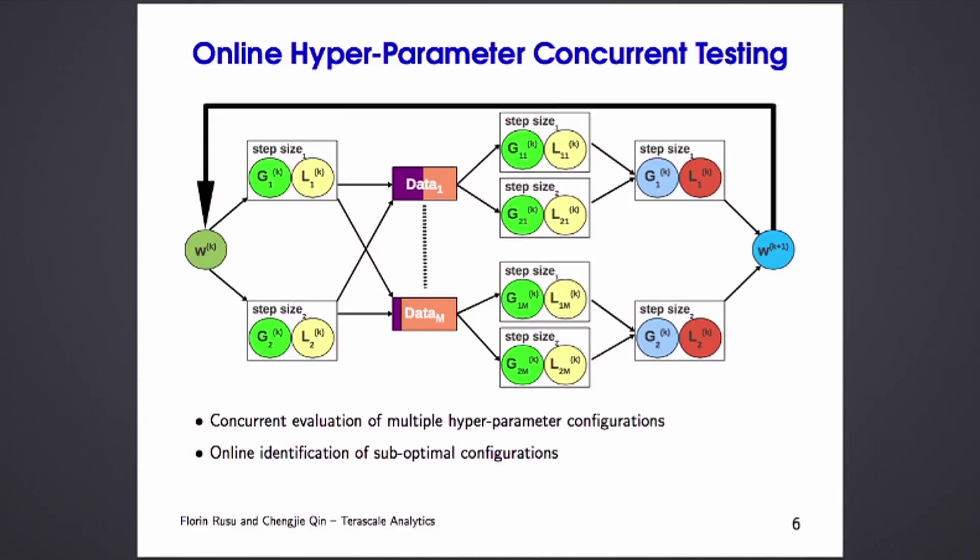That gradient descent method is actually more complicated in practice than what you have seen because there are a lot of hyper-parameters you have to train. If you use multi-query processing, you can do that training across multiple models simultaneously. Another thing from the database that you can take advantage of is online aggregation or sampling. With this, you can identify those combinations of hyper-parameters much faster and you can discard them.